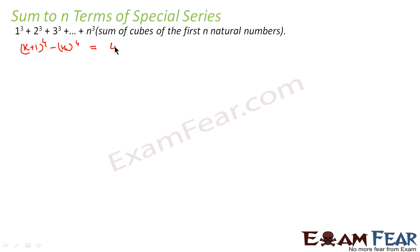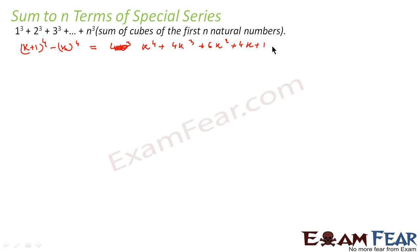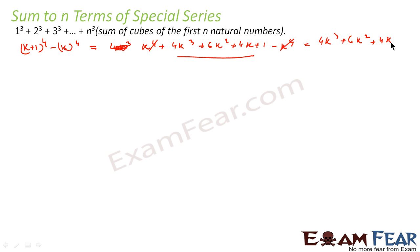...4k cube. We can expand this: it becomes k to the power 4 plus 4k cube plus 6k square plus 4k plus 1, and you subtract k to the power 4. So what you get is: 4k cube plus 6k square plus 4k plus 1. This is the value of (k+1)⁴ minus k⁴.